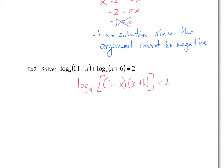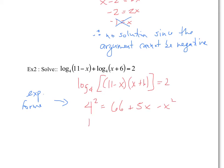We're going to multiply that together, but we have a log on one side and no log on the other side. To get rid of this log and solve for x, we're going to turn it into exponential form. So 4 to the power of 2 equals our argument. Expanding gives us 66 minus 6x plus 11x, so plus 5x minus x squared. The base to the power equals the argument — that's how we get the exponential form. So this gives us 16.